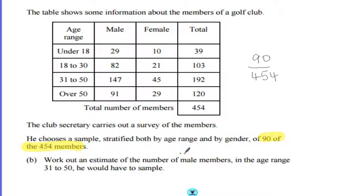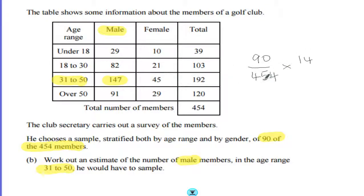Work out an estimate of the number of male members in the age range 31 to 50 that he would have to sample. Looking at our table, we're looking at males aged 31 to 50 — that's 147 of the 454 members. So we want a sample that is 90 over 454 of that number, meaning we do 90 over 454 times 147.